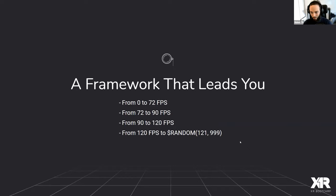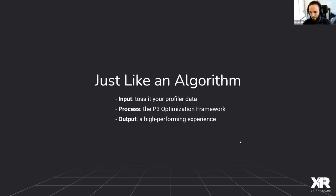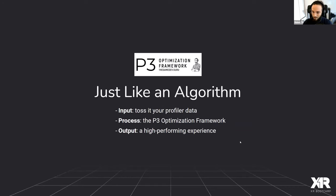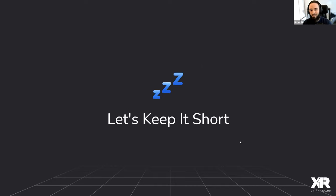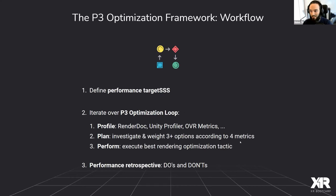There is hope for developers who are not experienced in performance optimization. What you need is to follow a structured optimization process — one that works and tells you at any point of your journey what the best next step is. You need one framework that helps you go from zero to 72 FPS, from 72 to 90, from 90 to 120 and beyond. You need an algorithm: give it an input like profiling metrics, run the P3 optimization framework, and get the desired output — a high-performing experience.